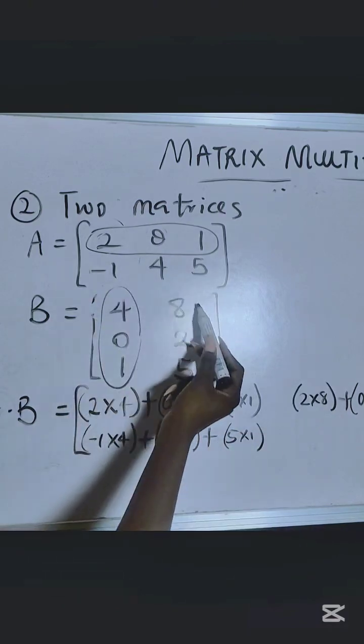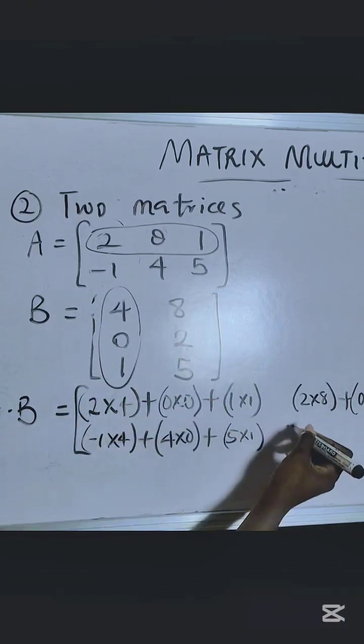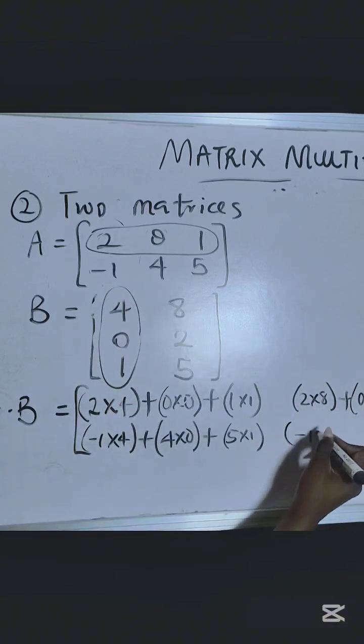Use the same row to multiply the second column here. So minus 1 times 8. You continue like that, right?